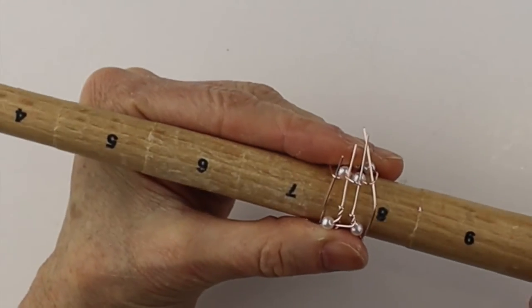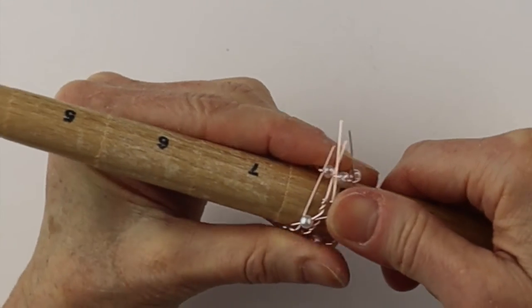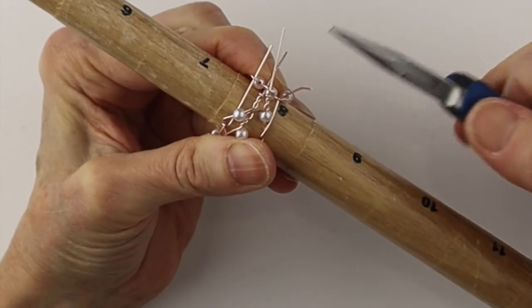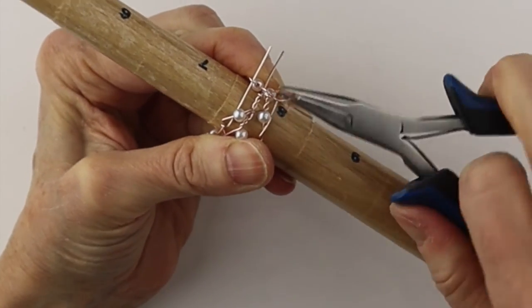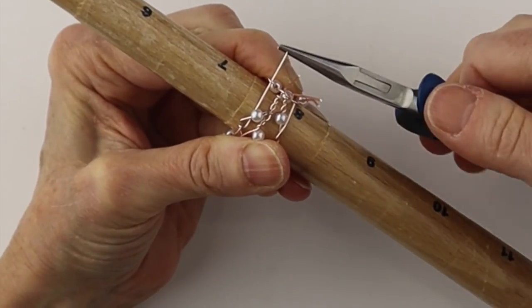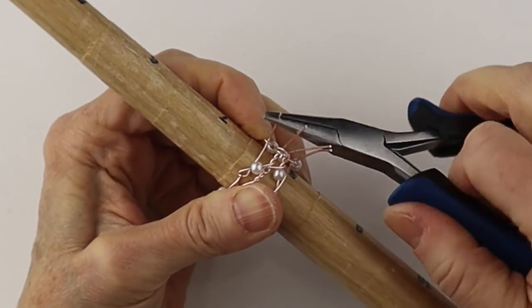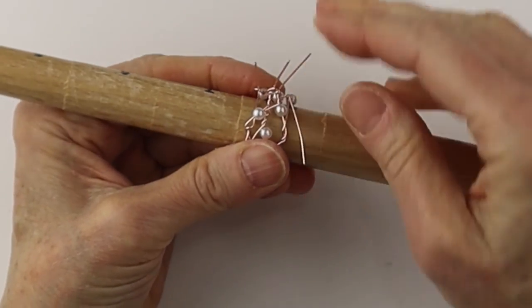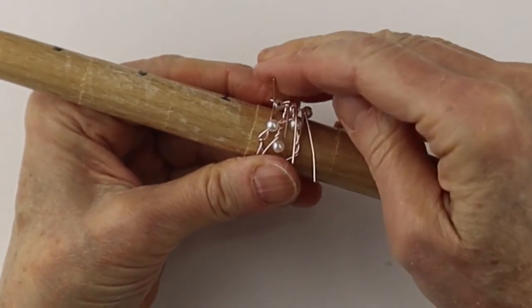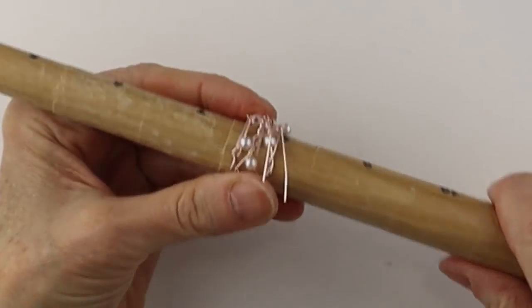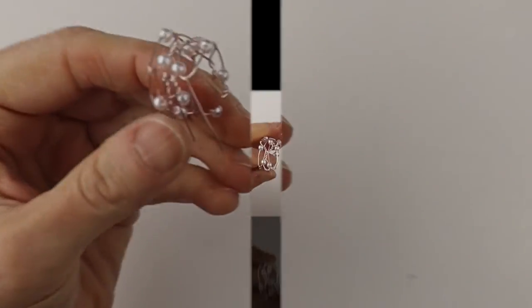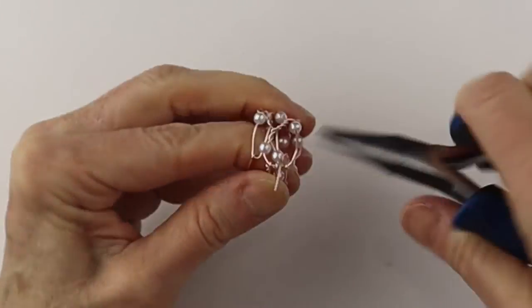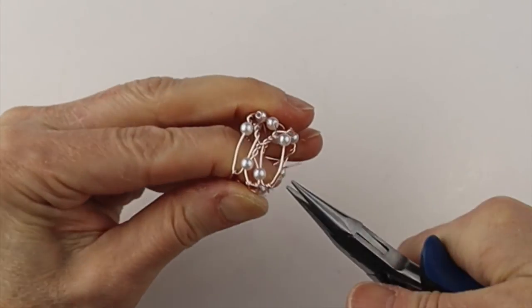So put it back on the ring mandrel, push it in so it's nice and snug, and take the end one by one with your flat pliers and pull them over. So we've got it started there. Now push them right down with your fingers. Remove it from the mandrel.